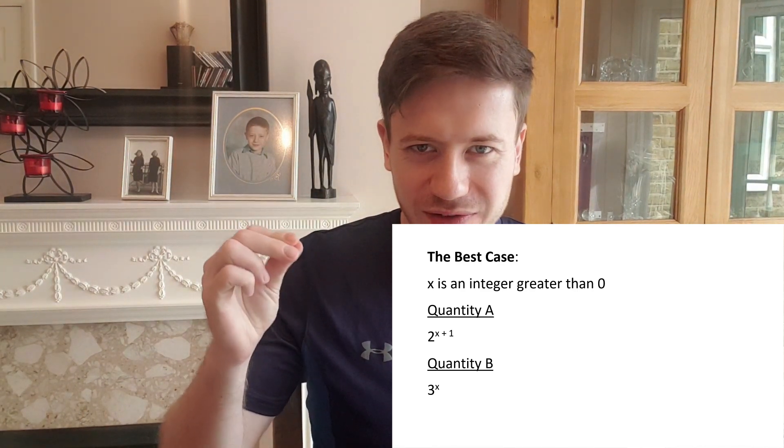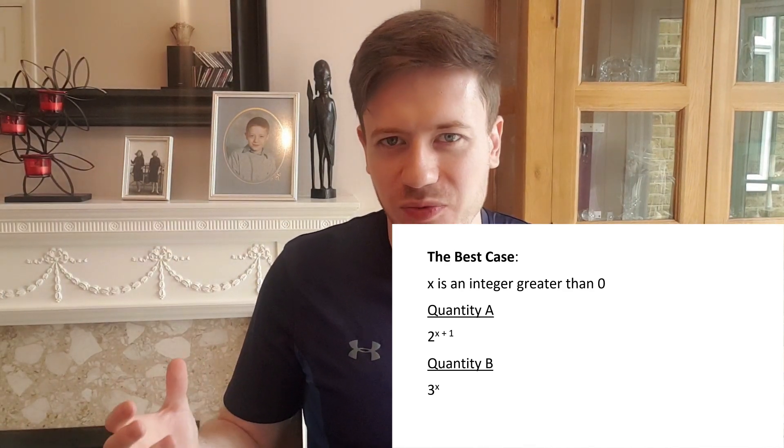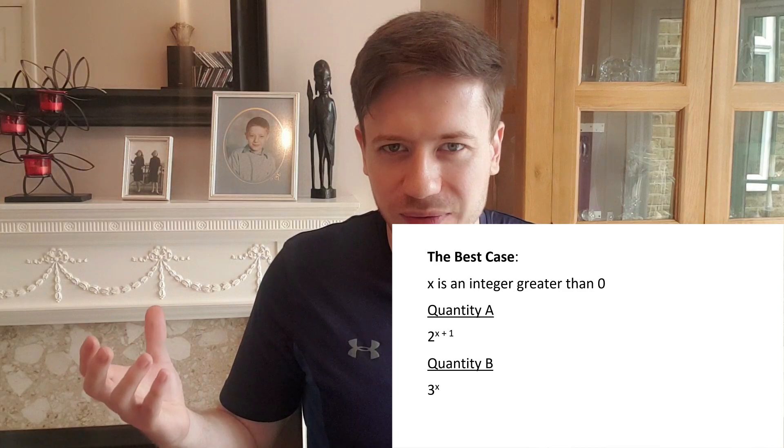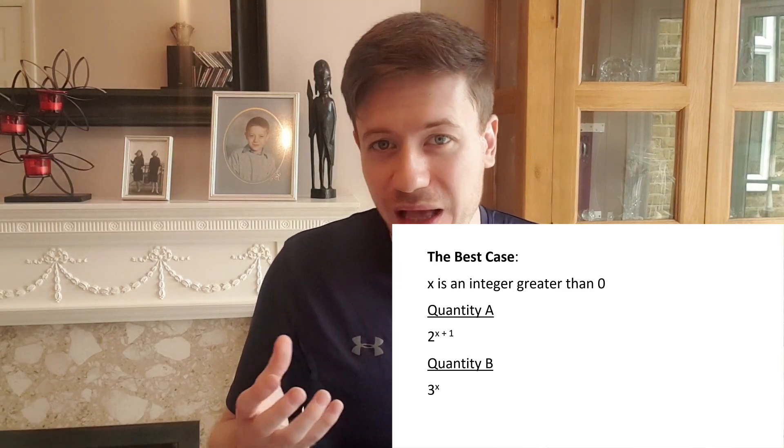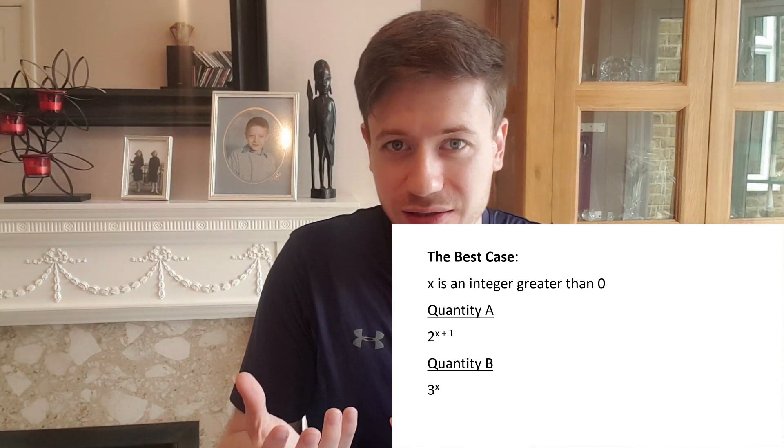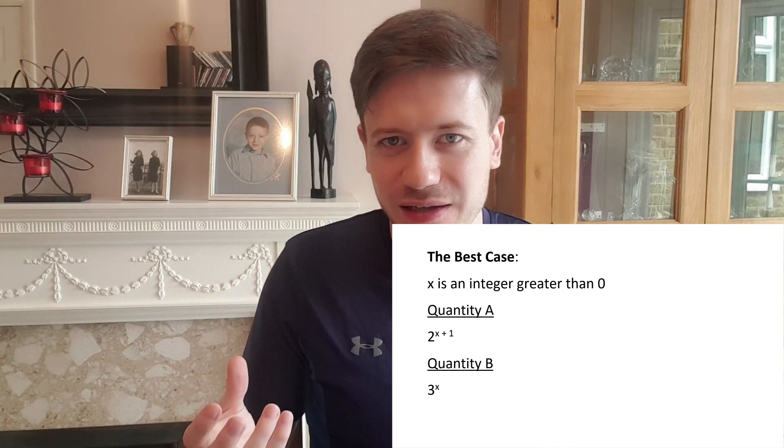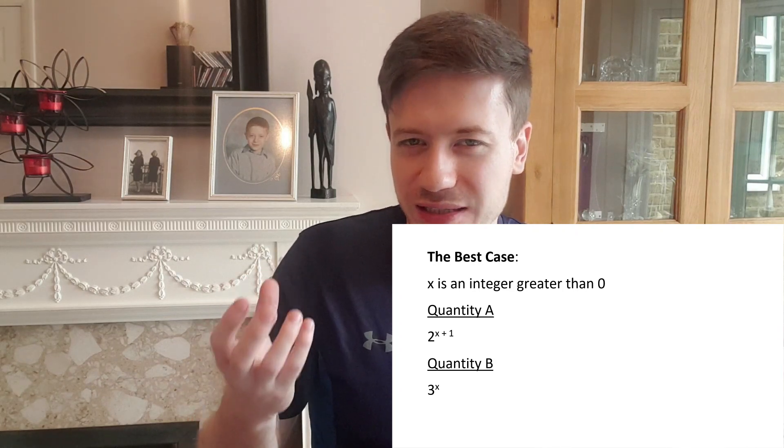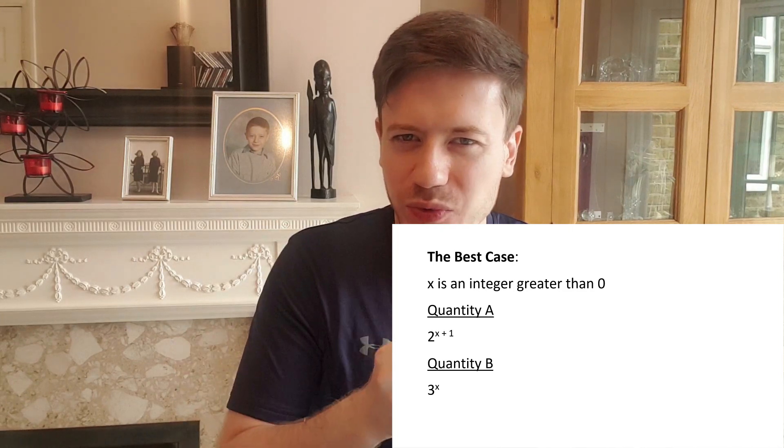But why is picking numbers perfect for this question? Because there's virtually nothing you can do to solve it algebraically. How would you even solve that? You can't simplify either quantity. There's no obvious mathematical truth that we can just observe to get the answer. The challenge is simply to find out which quantity is bigger and is it always bigger or only sometimes bigger.